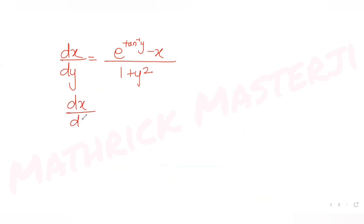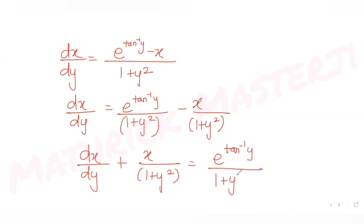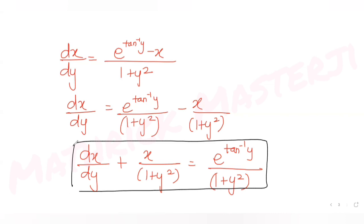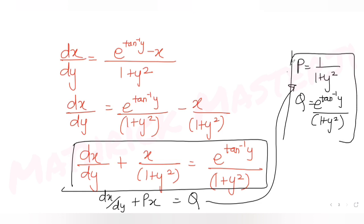Splitting the right-hand side: dx/dy = e^(tan⁻¹y)/(1 + y²) − x/(1 + y²). Rearranging gives dx/dy + x/(1 + y²) = e^(tan⁻¹y)/(1 + y²). Comparing with the standard form dx/dy + Px = Q, we identify P = 1/(1 + y²) and Q = e^(tan⁻¹y)/(1 + y²).